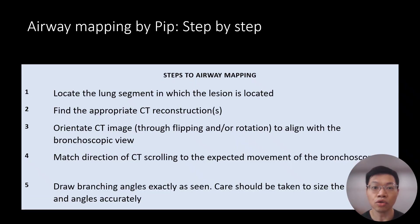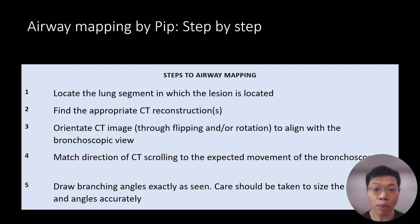To recap, this is our framework on the five steps to airway mapping. We will go through this together step by step. The first step is to locate the lung segment in which the lesion is located. Take a moment to rewind the video if you need to review the CT scan and lock in your answer.